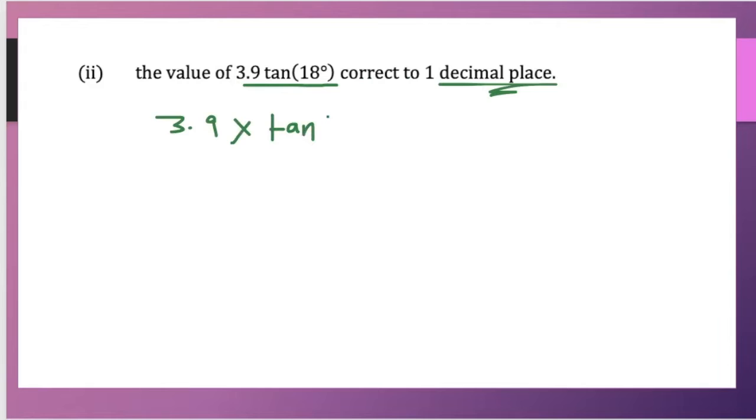Ensure that your calculator is in degrees. You're seeing D or DEG on the screen. So it's 3.9 times tan 18. You'll be getting 1.267 and it continues.